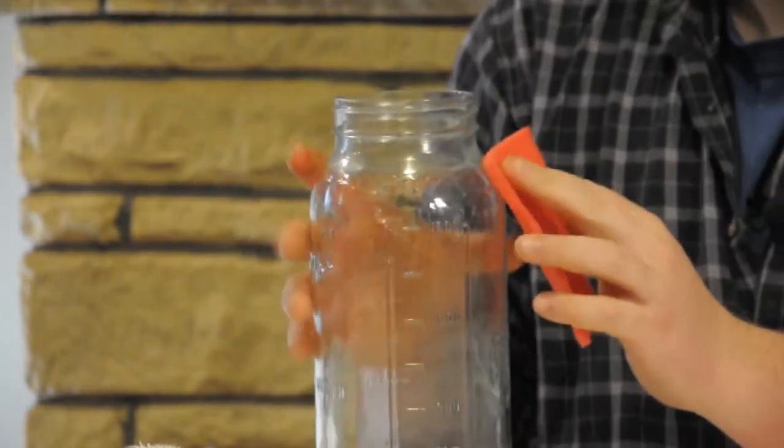I'm Joshua Clement with ID Contractors and I'm going to show you how to remove a rust ring from a glass canning jar.